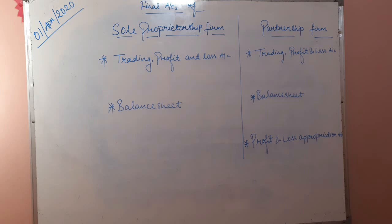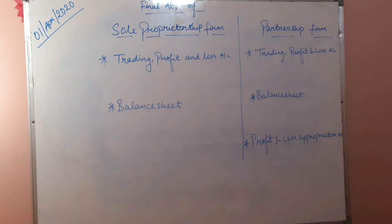If we talk about the final accounts of sole proprietorship firm and partnership firm, here is a comparison: on the right-hand side you have partnership firm final accounts and on the left-hand side you have final accounts of sole proprietorship firm. In case of sole proprietorship, as there is only a single owner, he or she prepares trading, profit and loss account, and then balance sheet. But in a partnership firm, one also has to prepare a profit and loss appropriation account to distribute profit among the different partners.